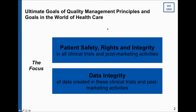The ultimate goal of quality management principles in healthcare is that we first keep our patients safe, protect their rights and integrity in all clinical trials and post-marketing activities, and that we can trust our data — the data integrity of data created in these clinical trials. Those are the two key goals.